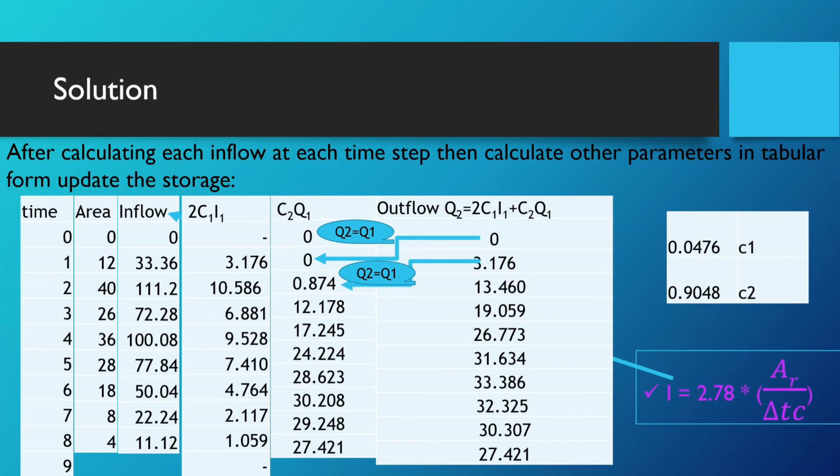Here in the ninth state, our value of C₂Q₁ is 27.421. Similarly, the outflow value Q₂ is 27.421. So after this, the value gets completed. The question is completed. We have to do the question up to this level.